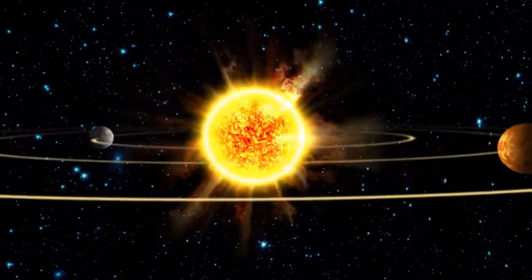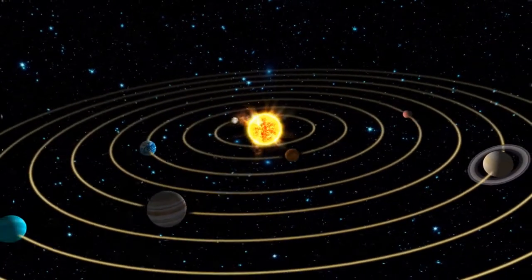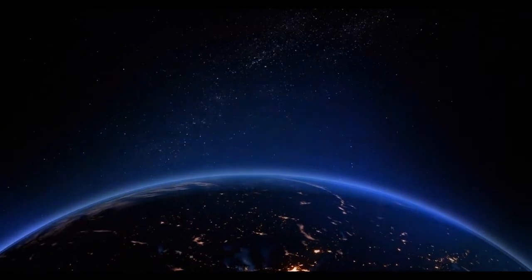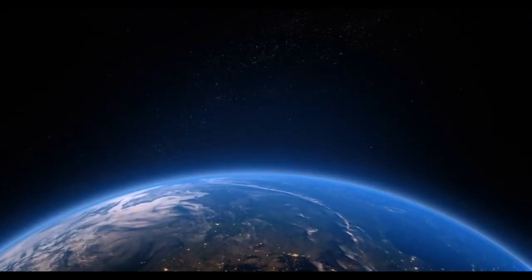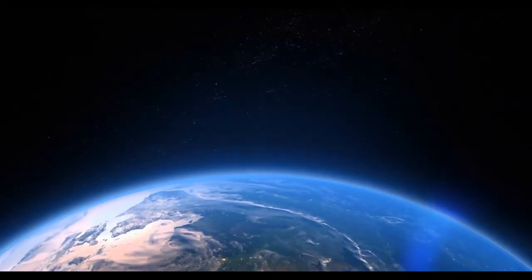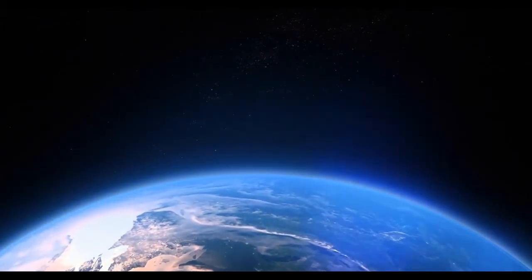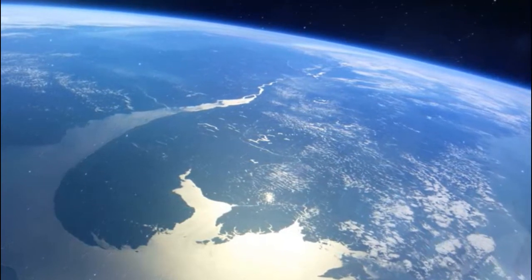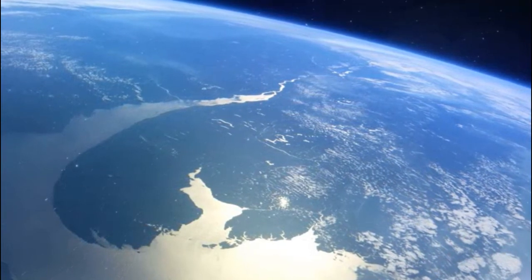As the Earth travels around the sun, a small fraction of particles from the solar wind are intercepted by the planet. Around 98% of these particles are deflected by the Earth's magnetic field and continue their journey into deep space. A small percentage of particles leak through the Earth's magnetic field and are funneled downwards towards the Earth's magnetic north and south poles. When these charged particles hit the atoms and molecules high up in our atmosphere, they become excited.